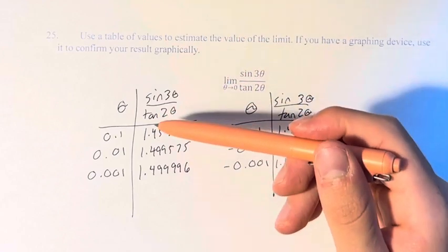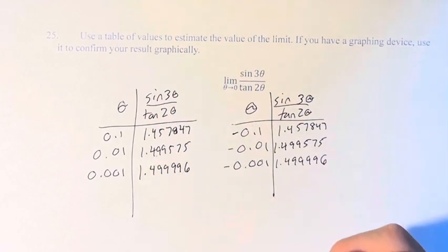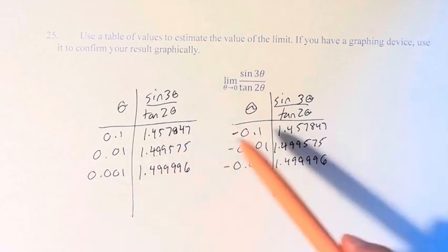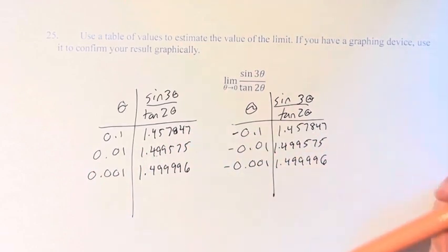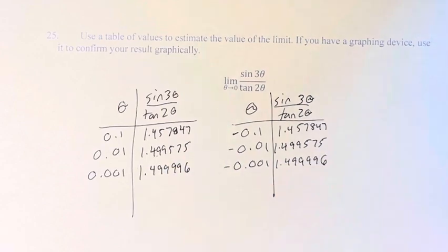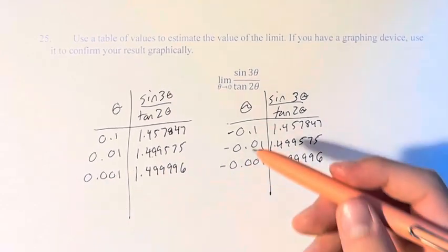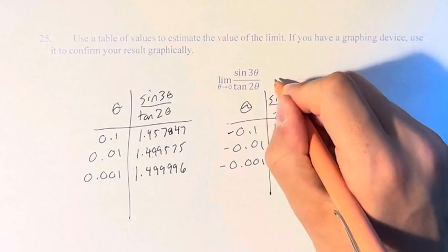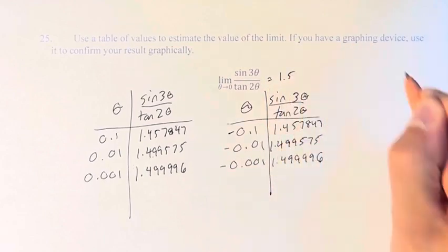So as we can see, by the fact that they are the exact same values corresponding with their negative counterparts, they must be reaching a similar value, and they are. They're reaching a value of 1.5. And since the left limit and the right limit are equal, we can see the overall limit is equal to 1.5.